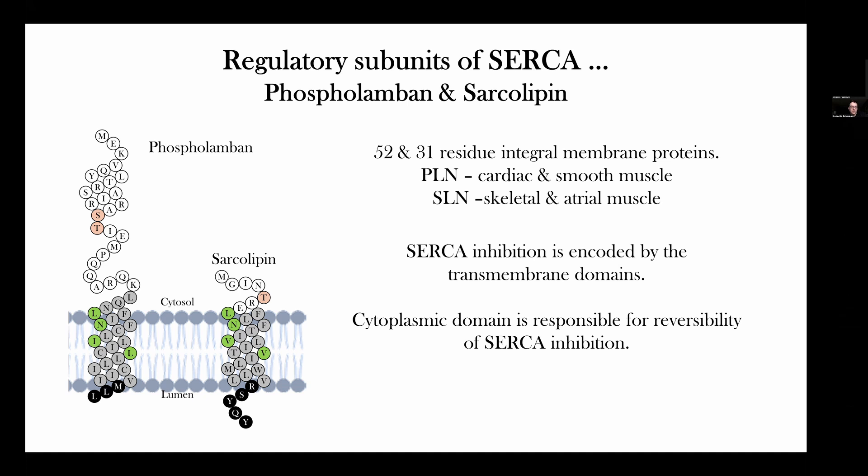As regulatory subunits of SERCA, two of the most well studied are phospholamban and sarcolipin. Both are integral membrane proteins — phospholamban is expressed in cardiac and smooth muscle, while sarcolipin is expressed in skeletal and atrial muscle. These peptides regulate SERCA's calcium transport properties, with most of these regulatory interactions encoded by their transmembrane domains. These peptides have been studied for about 50–60 years, with a large base of knowledge identifying key residues in the transmembrane domain critical for regulating SERCA's calcium transport properties.